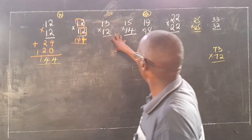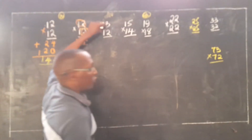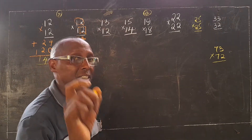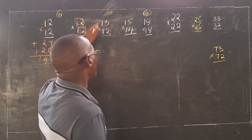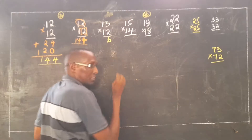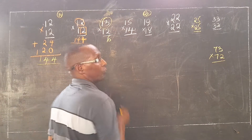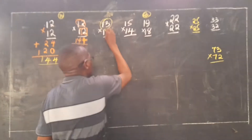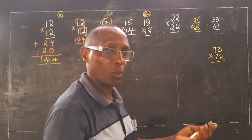We can prove that in these others. For example, here we have 13 times 12. The numbers in the place value of 1s are 3 and 2. Multiply them: 3 times 2, or 2 times 3, is 6. Take 13 plus 2, because 2 is in the place value of 1s: 15. That is your answer.